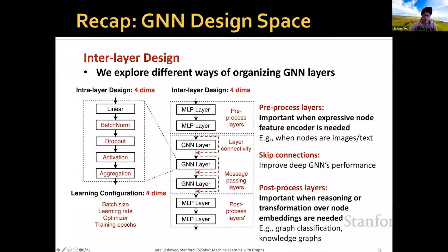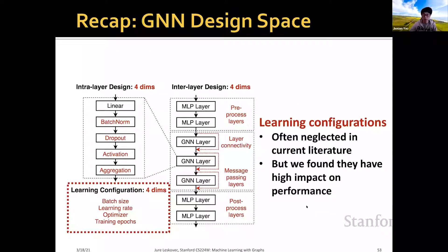The core of the graph neural network are the GNN layers, and there we consider different strategies to add skip connections. We found that this really helps improve deep GNNs' performance. Finally, we cover different learning configurations for GNNs. This is often neglected in current literature, but in practice we found that these learning configurations have high impact on a GNN's performance.